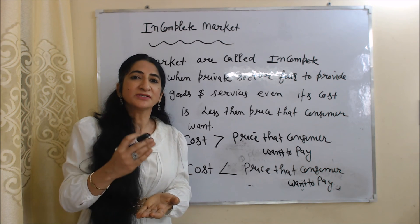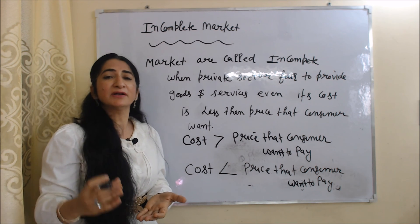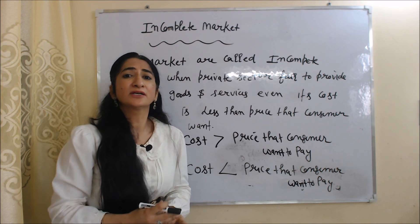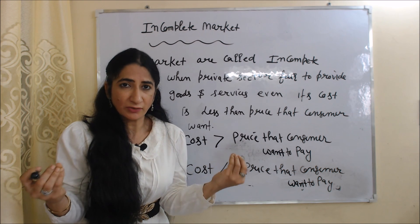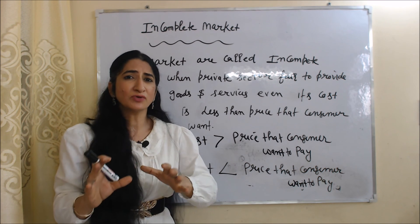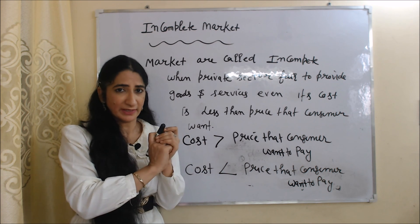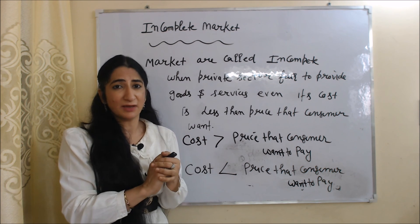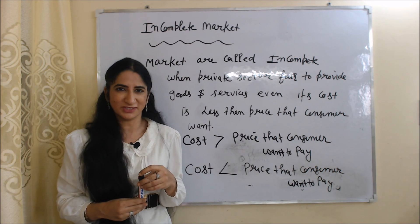Now we are going to talk about the last cause of market failure — incomplete markets. Markets are called incomplete when the private sector fails to provide goods, even when their cost is less than the price that consumers want to pay. The private sector wants to earn maximum profit and will not produce goods for which cost is higher than the price. But the market will fail if the private sector is not providing goods whose cost is less than the price consumers will pay. That's all about causes of market failure. Thank you so much for watching.